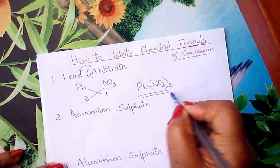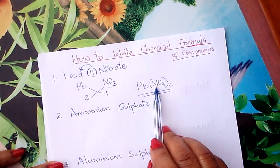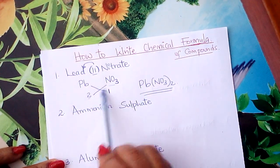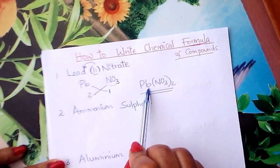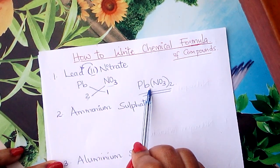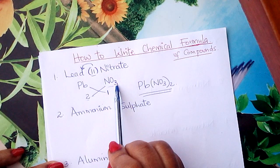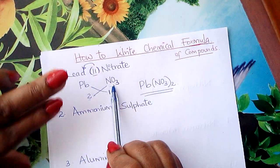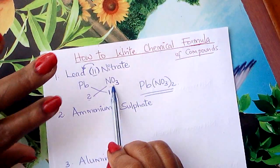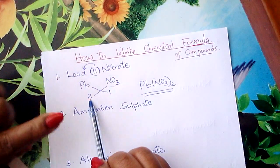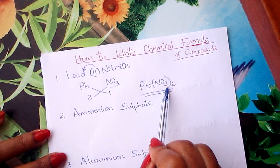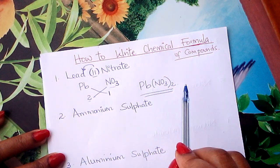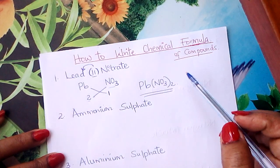And therefore, this is lead(II) nitrate. Valency 2, valency 1 — interchange. Pb takes 1, write it that way, ignore the 1. Nitrate is a radical. If a radical takes more than 1 — like now it has 2 — you put it inside the bracket and you put 2. That normally makes students fail, and that is why I'm repeating, dear learner.